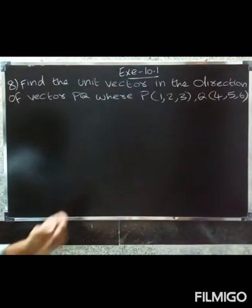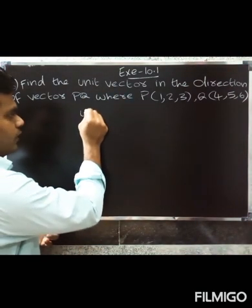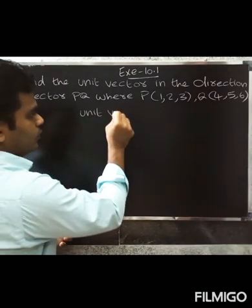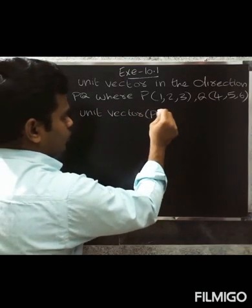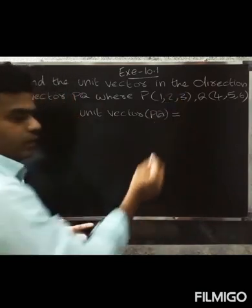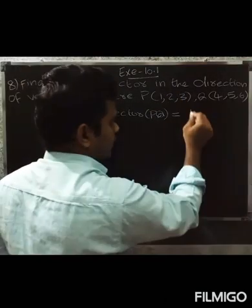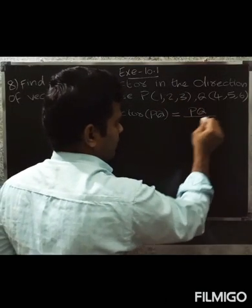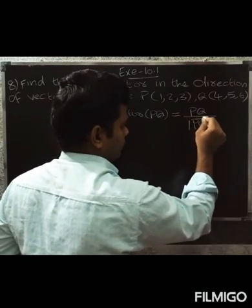So now we need the unit vector of PQ. The formula for the unit vector of PQ is: PQ vector divided by the modulus of PQ vector.